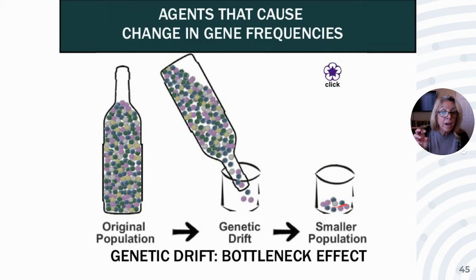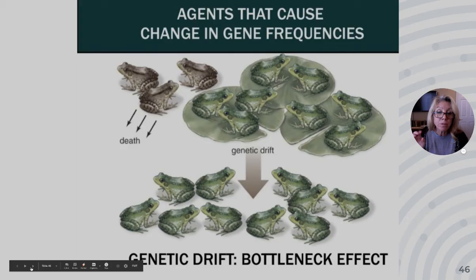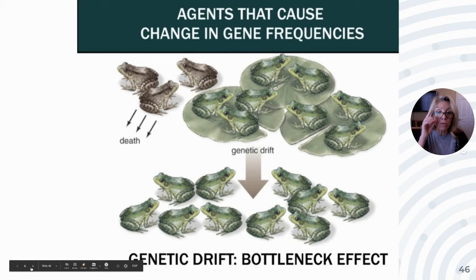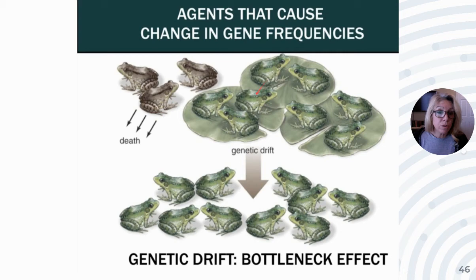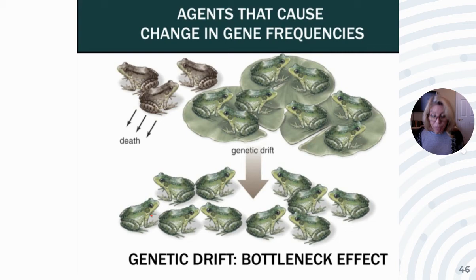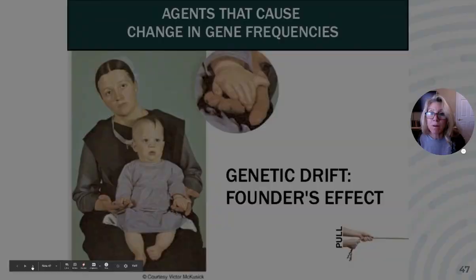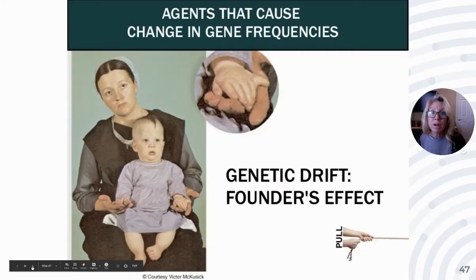This smaller population that came through the bottleneck is not representative of the original population. For example, if a population of frogs had brown and green frogs, and a tree fell by chance on the brown frogs — not because they were less adaptive, just chance — and since the population was so small, the brown allele has been eliminated and you now only see green frogs. The bottleneck effect is a disaster happens, and the new population's allele frequency does not reflect the original.